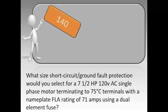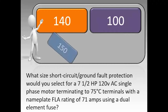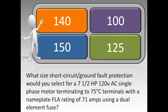What size short-circuit ground-fault protection would you select for a seven-and-a-half horsepower, 120-volt AC single-phase motor terminating to 75-degrees-C terminals with a nameplate FLA rating of 71 amps, using a dual element fuse?